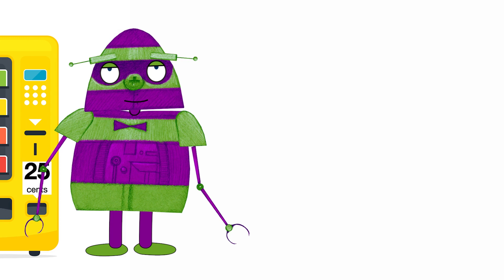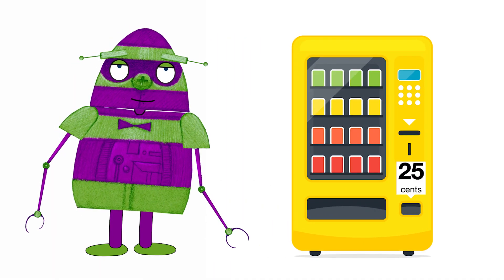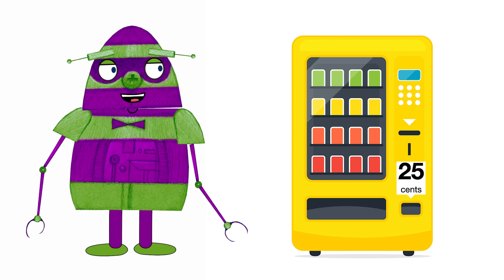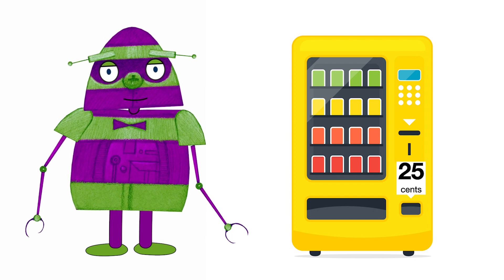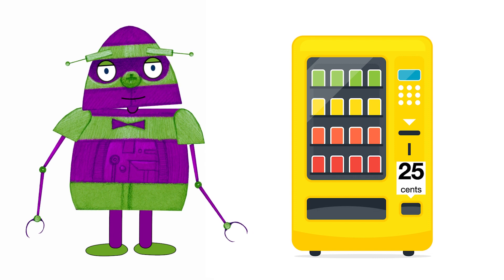Now it's your turn. Consider the case where the price of a snack is 25 cents. What would be the inputs? What would be the possible states? What would be the possible transitions between states? Design the abstract machine for this case.